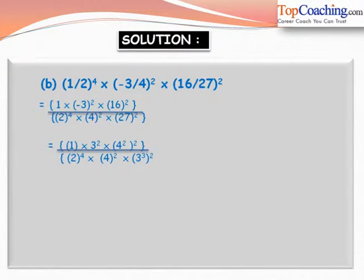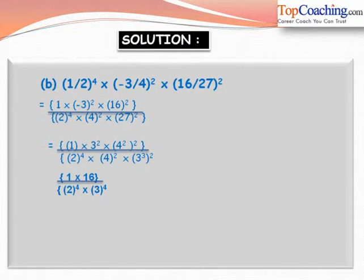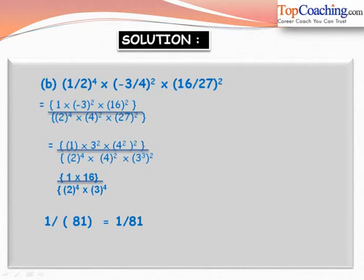This reduces to 1 into 16, divided by 2 to the power of 4 into 3 to the power of 4. Since 2 to the power of 4 equals 16, the 16s cancel, giving 1 by 3 to the power of 4. Since 3 to the power of 4 equals 81, the final answer is 1 by 81. Using the laws of exponents we can find the answer to this problem.